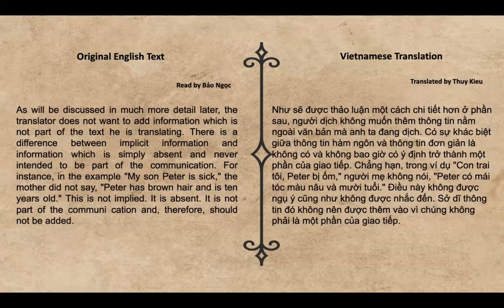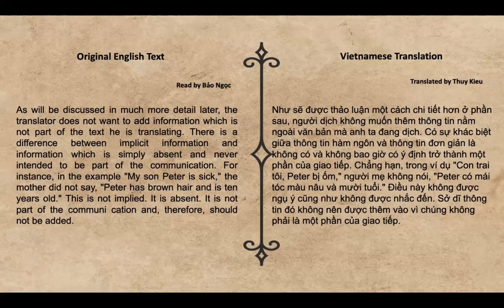As will be discussed in much more detail later, the translator doesn't want to add information which is not part of the text being translated. There is a difference between implicit information and information which is simply absent and never intended to be part of the communication. For instance, in the example 'My son Peter is sick,' the mother does not say Peter has brown hair and is 10 years old. This is not implied — it is simply absent, not part of the communication, and therefore should not be added.